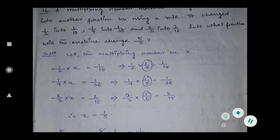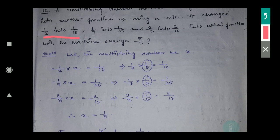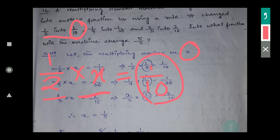According to the question, 1/2 changed to 1/10. So if I multiply 1/2 by x, it gives 1/10. So I have written: 1/2 into x equals 1/10. Now tell me, with 1/2, what number do I have to multiply to get 1/10? In the numerator 1 is there, so 1 stays. In the denominator, 2 is there and 10 is there, so I have to multiply 2 by 5.